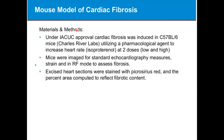Just a little background on the model we used. Under IACUC approval, we induced cardiac fibrosis using a pharmacological agent to chronically increase heart rate. That agent is called isoproterenol, and we explored it at two different doses: a low dose and a high dose. The mice were imaged for standard echo, strain, and NRF mode to assess fibrosis at baseline, day 12, and day 20. The excised heart sections at the end of the study were stained for picrosirius red, and the percent area of that staining was computed to reflect the fibrotic content.